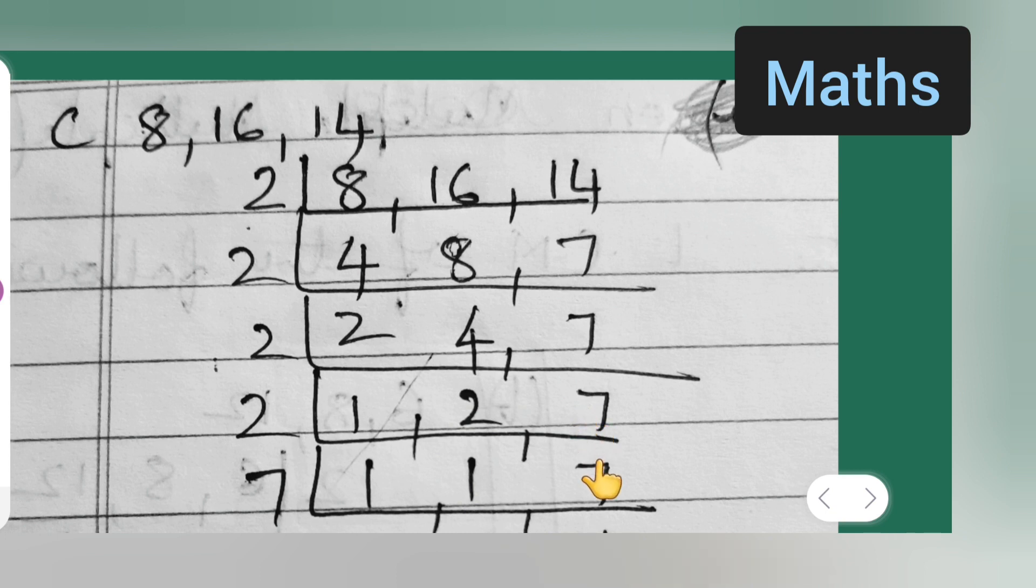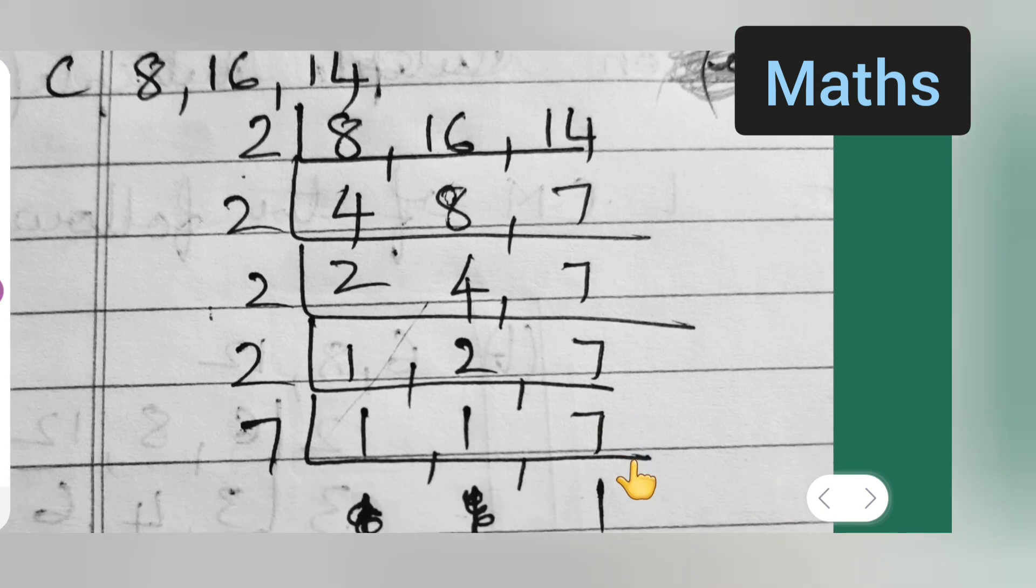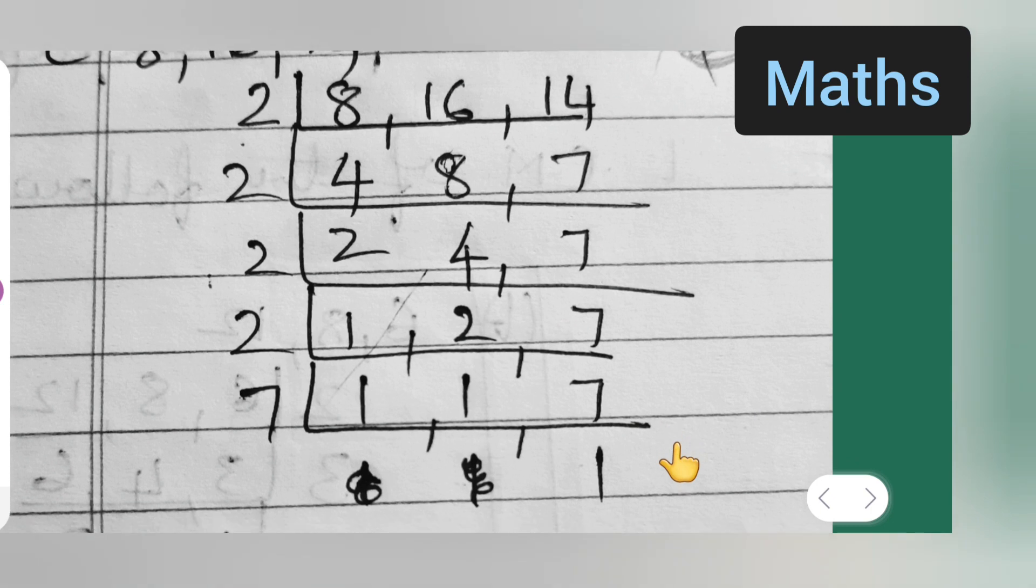7 is a prime number, so we will get it in the table of 7 only. So basically 7 ones are 7. So finally what we get is 1, 1, 1.